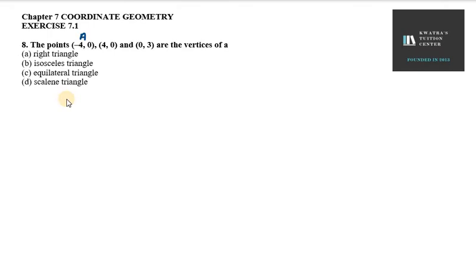I will take the first point as A, second as B, and third as C. We will find AB, BC, and CA. If all sides are the same, then equilateral. If two sides are equal, then isosceles. If it follows the hypotenuse condition, then it is a right triangle. If all sides are different, then scalene.